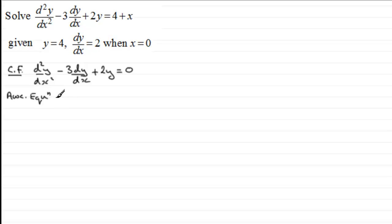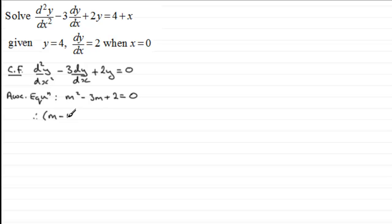To do this we set up the auxiliary equation. That auxiliary equation is going to be m² minus 3m plus 2 equals 0. This particular auxiliary equation factorises into two brackets: m minus 1, multiplied by m minus 2, equals 0. This gives us two real and different roots.